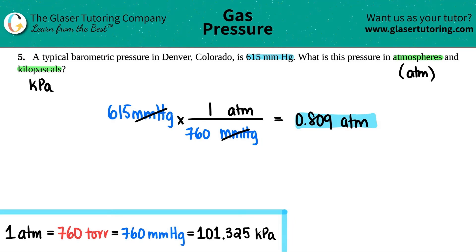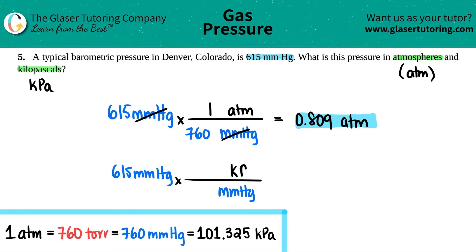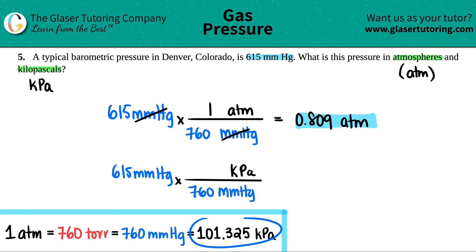Now for kilopascals: 615 millimeters of mercury times a ratio again. Millimeters of mercury goes on the bottom, kilopascals go on top. Pick the two units and their numbers: for every 760 millimeters of mercury on the bottom, there are 101.325 kilopascals on top.